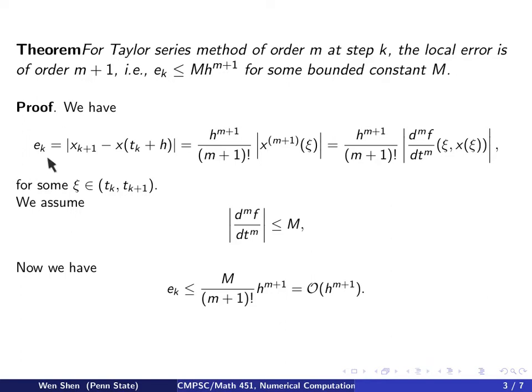Then, just using the previous equation, we know that eₖ now is bounded by some constant M over (m+1)! times h to the m + 1. So fix m, this expression here is nothing but a constant that says this quantity here is of order h to the power m + 1.